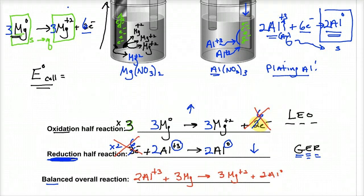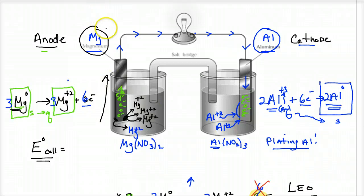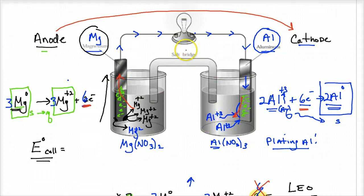Going back to the diagram: electrons always flow from anode to cathode. The anode pushes the electrons and the cathode accepts them. This doesn't work, however, without discussing something called the salt bridge.